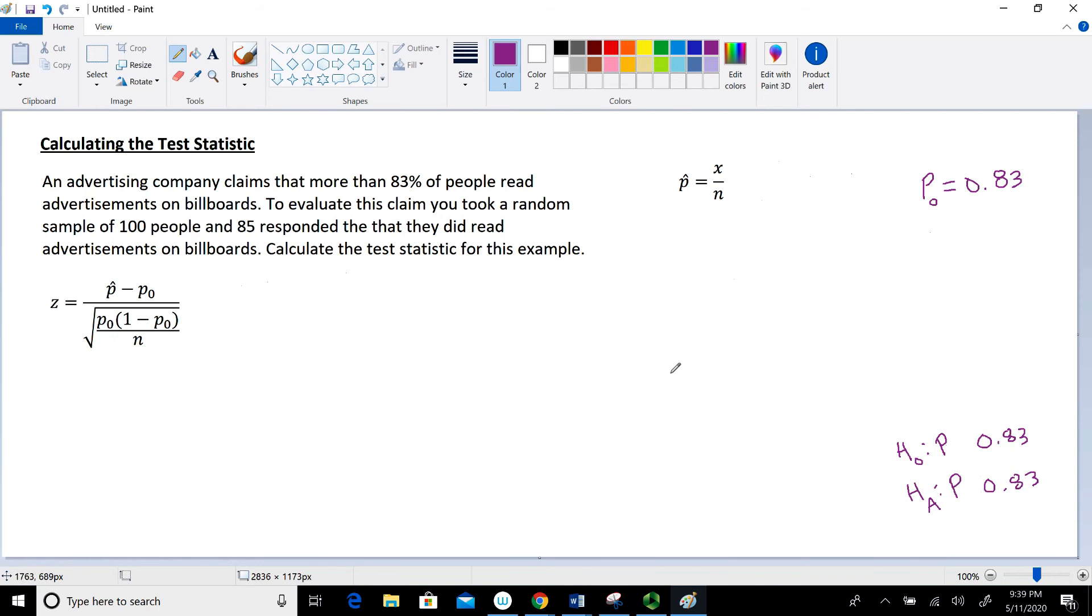And if you recall, I talked about the fact that the statements of strict inequality fall in the alternative hypothesis statement. And if you look in that very first line, it says more than 83%, so that's the greater than symbol, and that's going to go in H sub A. And I like to use the complement rule when I'm first starting to teach hypothesis statements. So that means H sub 0 is going to have to be less than or equal to 0.83.